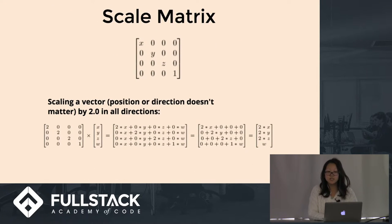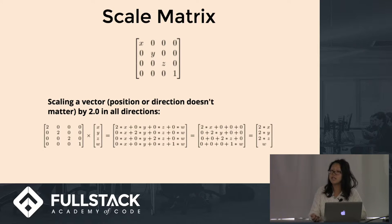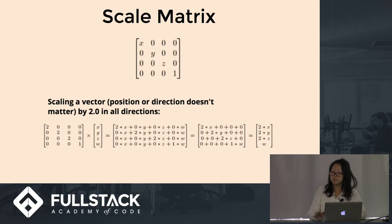Next is the scaling matrix, which determines the scale or size of your vector. When you scale a vector, position or direction doesn't matter — you just do straight multiplication.